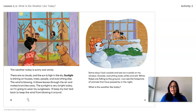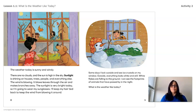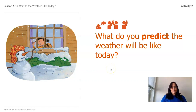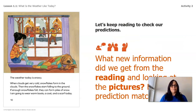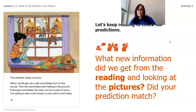Some days I look outside and see ice crystals on my window. Outside, everything looks white and still. White flakes are falling on the ground, and I can see footprints of animals that have passed in the night. What is the weather like today — can you guess? What do you predict? We see snow, we see flakes. Are you thinking the weather is going to be snowy? I think so too. Let's keep reading to check our predictions.